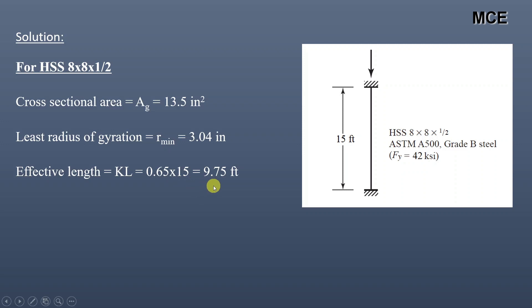Slenderness ratio is given as effective length divided by least radius of gyration, that is 9.75 times 12 divided by 3.04, which is equal to 38.49, which is less than the upper limit of 200.